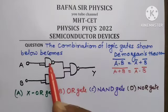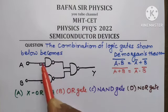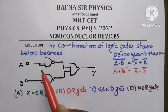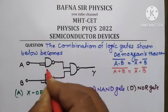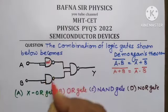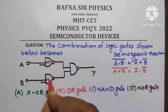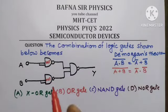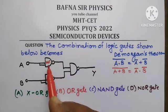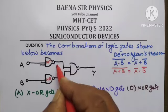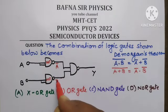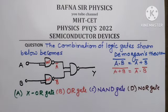Now, look at this circuit. The first gate here is actually a NAND gate — a single input NAND gate. The two inputs of the NAND gate are shorted, so it is a single input NAND gate and it works as a NOT gate. The lower one is also representing a NAND gate because both inputs are shorted. So, if its input is A, the output is A-bar. If input is B, the output is B-bar.